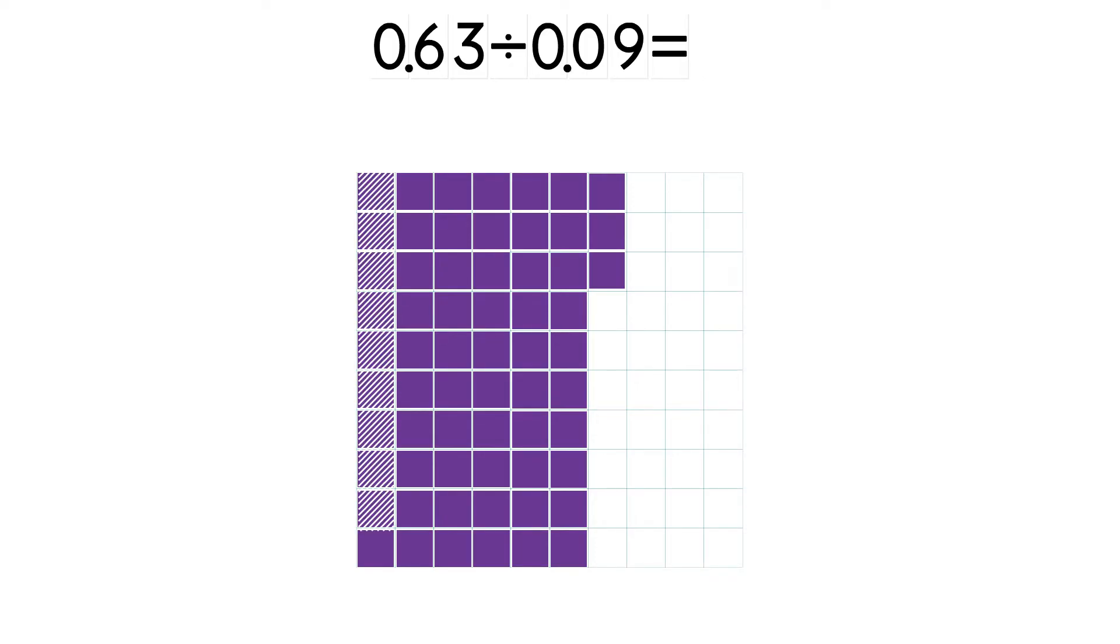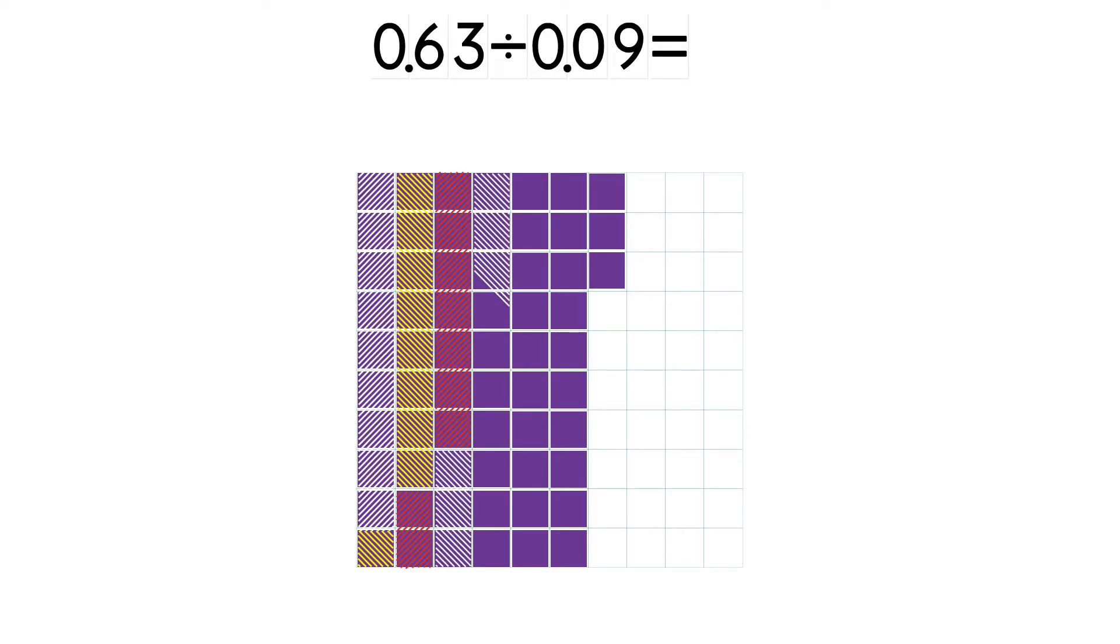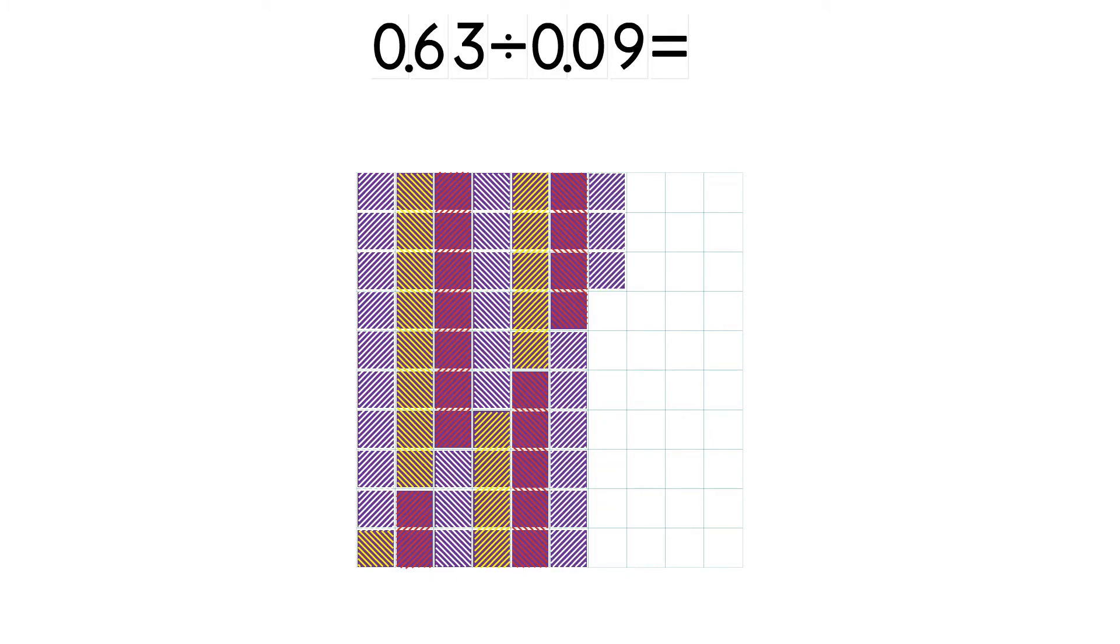Divide the 63 small squares into groups of 9 hundredths to represent the divisor, 0.09. Now we count the groups. There are 7 groups of 0.09 in 0.63. So 0.63 divided by 0.09 equals 7.